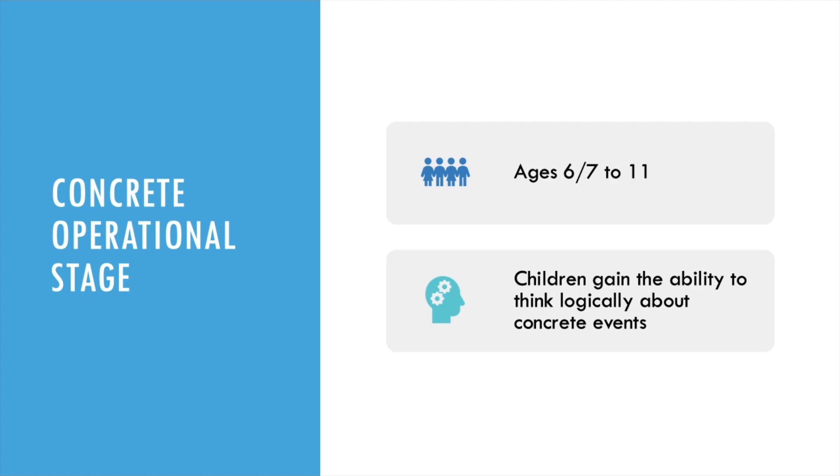Now let's talk about the concrete operational stage — the third stage — occurring from about ages 6-7 to 11. Children gain the ability to think logically about concrete events and begin to grasp conservation. For example: if John is in school, then Mary is in school; John is in school — what can we say about Mary? Mary's in school also. So even though Frank doesn't know anyone named John and Mary, he was able to think abstractly and answer the question.